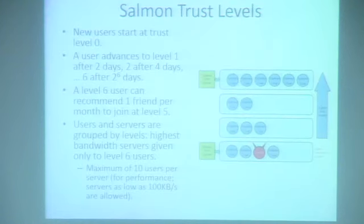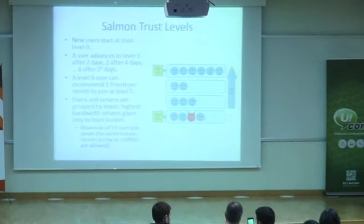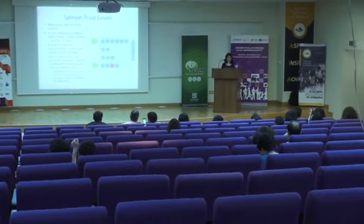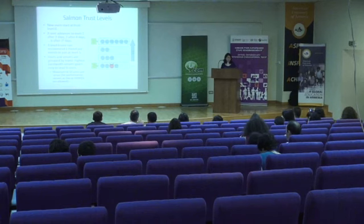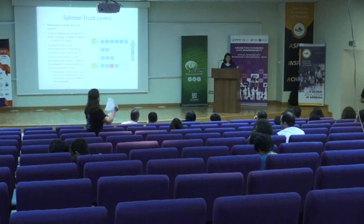Let's see how trust levels work. Each new user joins at trust level zero. As we trust them more, their trust level goes up. There are two ways to improve trust level: first is to behave well — as long as the server is not blocked while they are using it, we improve their trust level over time. A user advances to level one after two days, level two after four days, level three after eight days, and level six after 2-to-the-6 days.